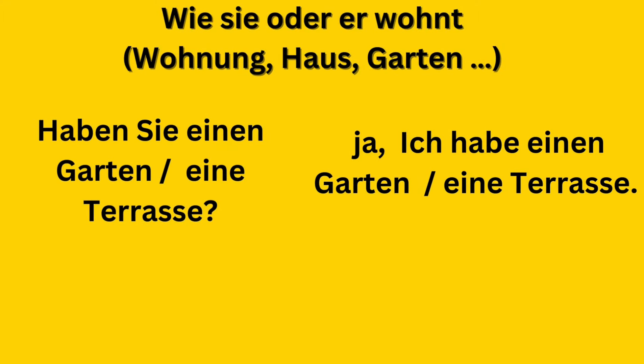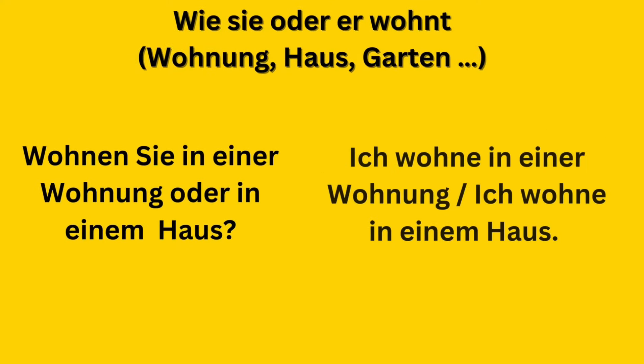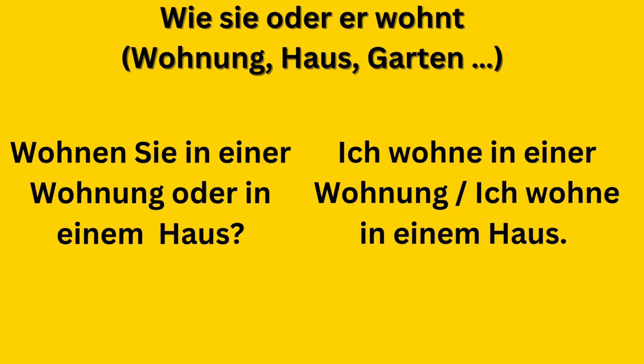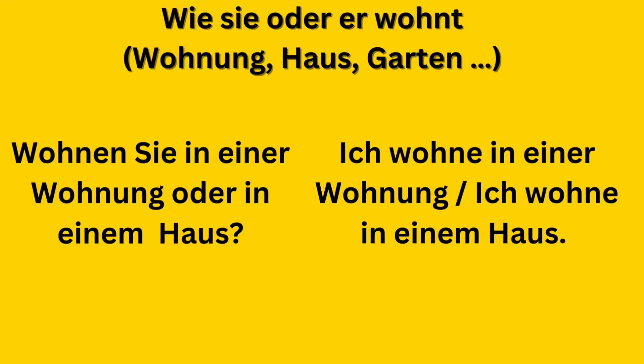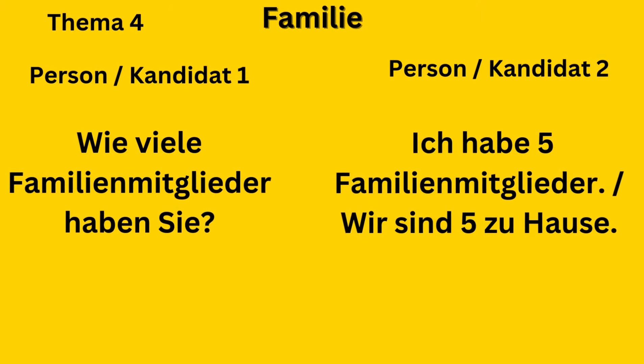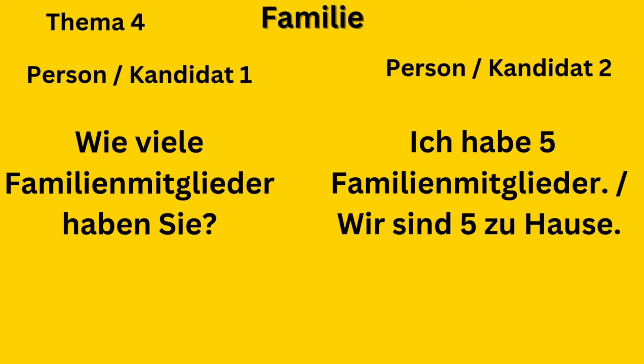You can also form a discussion: Haben Sie einen Garten oder haben Sie eine Terrasse? Answer: Ja, ich habe einen Garten, or Ja, ich habe eine Terrasse. There are many question options — you can use any of them. Another question: Wohnen Sie in einer Wohnung oder in einem Haus? Answer: Ich wohne in einer Wohnung, or Ich wohne in einem Haus.